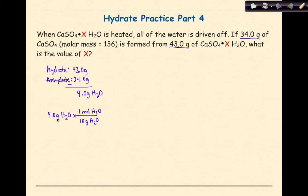I want to make sure that my grams cancel. So when I work this out, 9 times 1 divided by 18 gives me 0.5 moles of water.